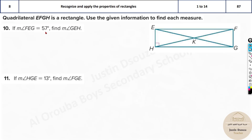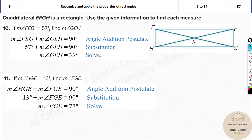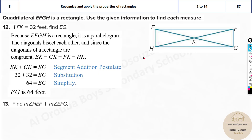Pause the video and try the next ones yourself. For these: angle FEG is 57°, so angle GEH = 90 − 57 = 33°. Angle HGE is 13°, so angle FGE = 90 − 13 = 77°. These follow directly because each full corner angle in a rectangle is 90 degrees.